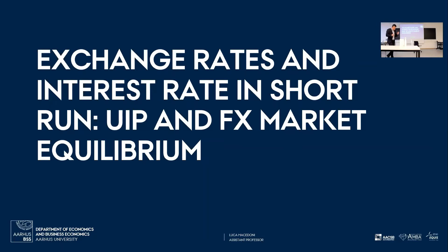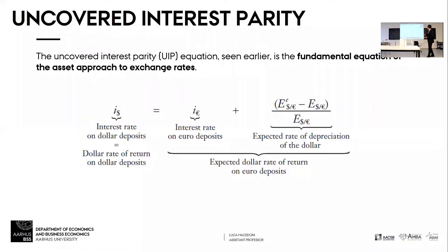So this is the idea: in the short run, financial markets determine the exchange rate. In the long run, when prices of goods adjust, that's what's going to determine the exchange rate. The equilibrium in the market for financial assets — which we already saw — is captured by our uncovered interest parity condition. We basically saw that the interest rate on dollar deposits or on the treasury bond equals the interest rate on your foreign deposit plus the expected rate of depreciation.